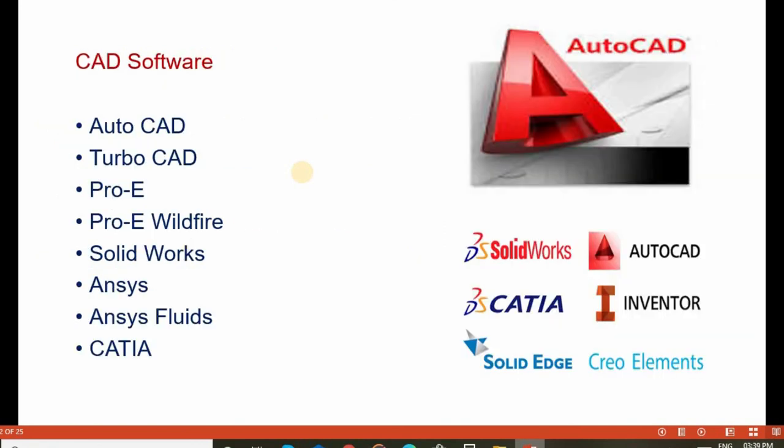This graphic display system is needed for various CAD software such as AutoCAD and TurboCAD, which are used for two-dimensional graphic image creation, and ProE, ProE Wildfire, and SolidWorks, which are used for three-dimensional graphic image creation. Analysis of graphical images or objects is done using ANSYS, ANSYS Fluids, and CATIA. So far we have discussed classification of hardware and software, color CRT monitor, shadow mask method, beam penetration method, and flat panel display methods such as LCD and LED. Thanks for listening.